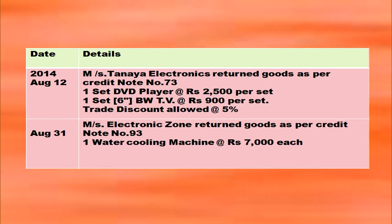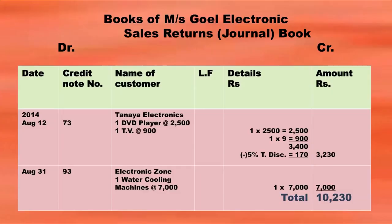Messrs Tanya Electronics and Messrs Electronics Zone returned goods — these are cases of sales returns, so they are recorded in the sales returns book with trade discount deducted in one transaction. Write the heading 'Books of Messrs Goel Electronics — Sales Returns Book or Sales Returns Journal' with columns: date, credit note number, name of customer, ledger folio, details, and amount. Apply the trade discount deduction as shown.